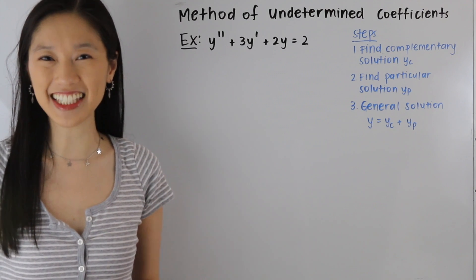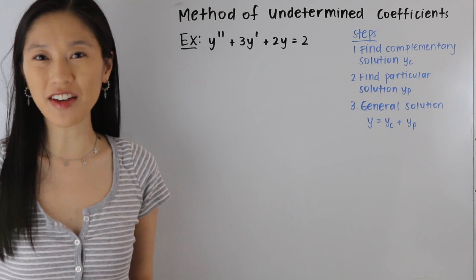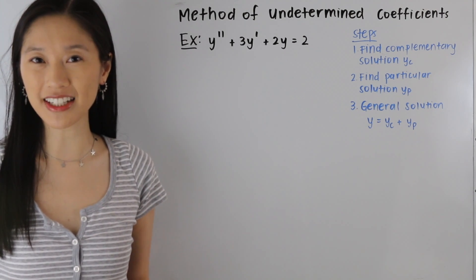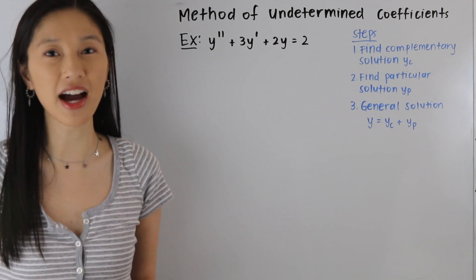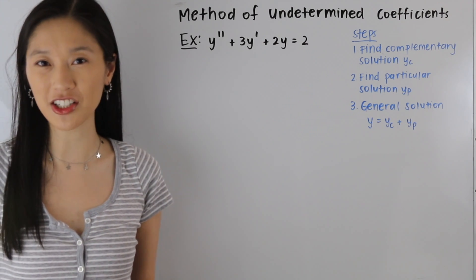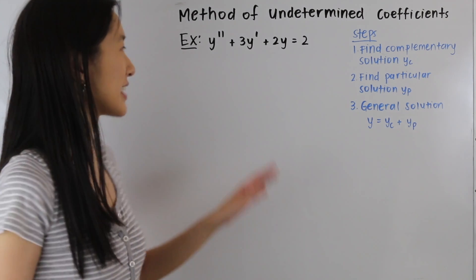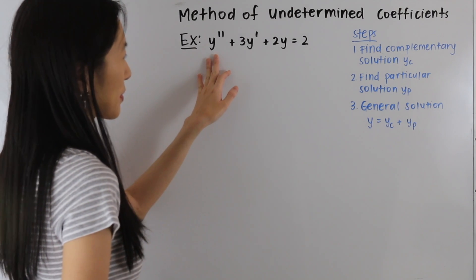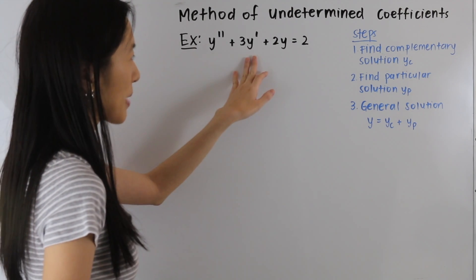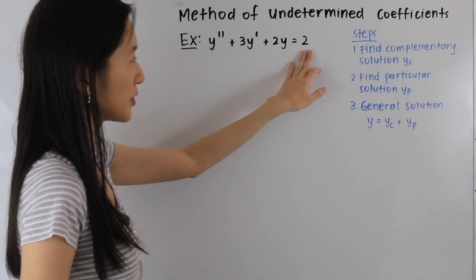Hey guys, Janine here, and in today's video we are going to be learning how to solve a non-homogeneous differential equation using the method of undetermined coefficients. So let's go ahead and take a look at this example here. We have y double prime plus 3y prime plus 2y is equal to 2.